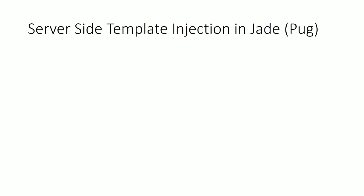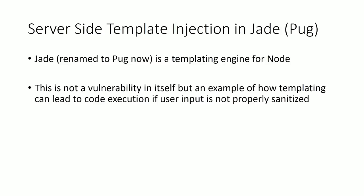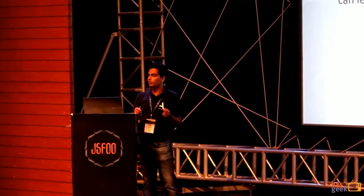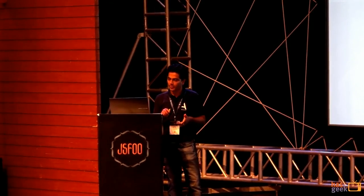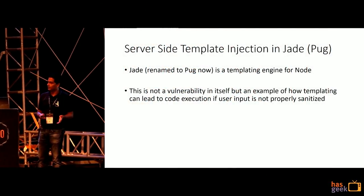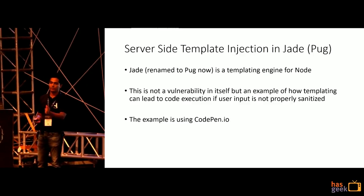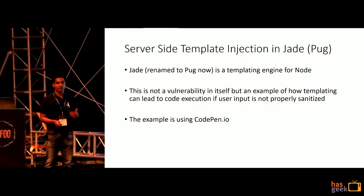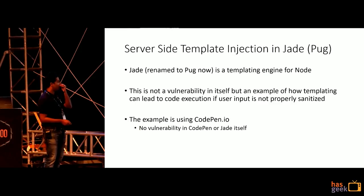Server-side template injection in Jade — now called Pug — is a templating engine for Node. This isn't exactly a vulnerability itself but more like feature abuse. The idea is that no matter what you have, as long as you take user input and make it part of your code or processing, there's a possibility you could break stuff. The example demo was on codepen.io. The specific exploit has been fixed, but up to the step before code execution on the server, it still works. I reproduced it.